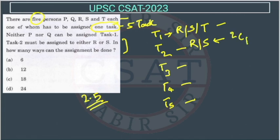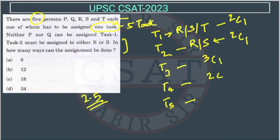For task 2, there are two people to choose from, so this will be 2C1. For task 1, there were originally three options (R, S, T), but one of R or S is already assigned to task 2, so there are two remaining — we choose one, giving 2C1. Now two people already have tasks, leaving three people. One will be selected for task 3, then out of two remaining, one for task 4, and the last person gets task 5. So the total number of ways is 2 × 2 × 3 × 2.